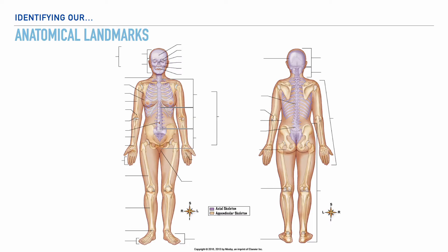Starting with the image on our left-hand side: first, we have the cephalic region, which simply represents the head. Part of the head includes our skull, which we can also refer to as the cranial area or cranium, and the other portion is the facial area. Moving over, we have the frontal bone, which refers to the forehead; the orbital bone, which refers to the eye sockets; the nasal bone, referring to the nose; and the zygomatic bone, which refers to the upper cheek.